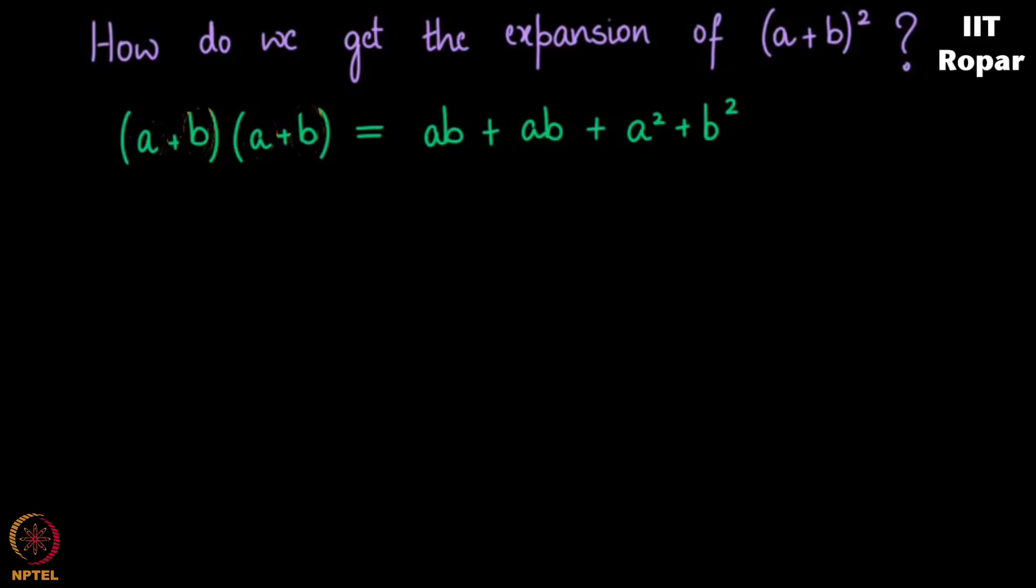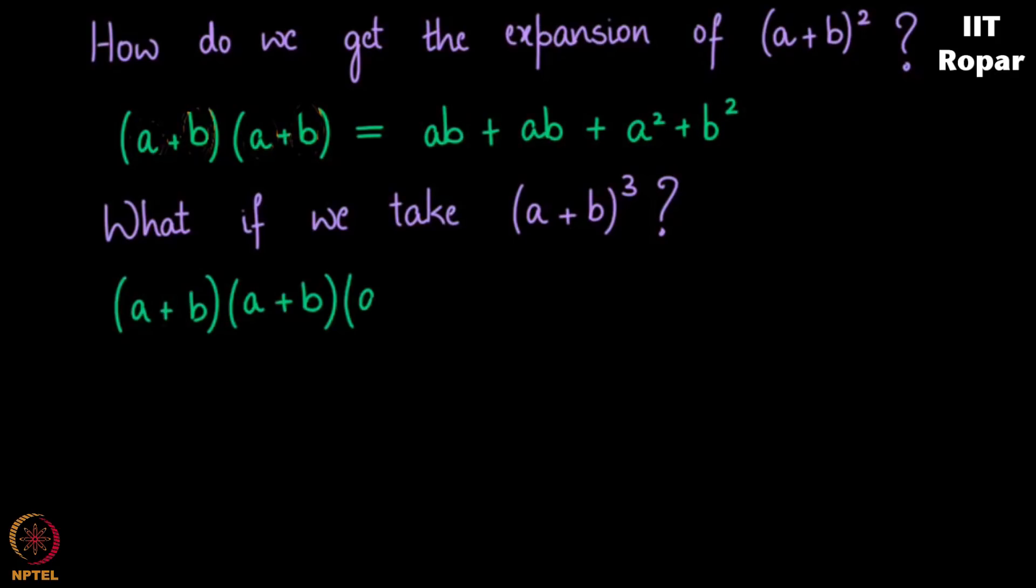But what I want you all to observe is what happens when we take a plus b the whole cube. You could write it as a plus b into a plus b into a plus b, thrice, right? How does the multiplication actually happen is the question that we are posing here.